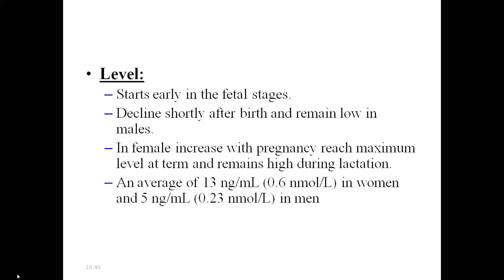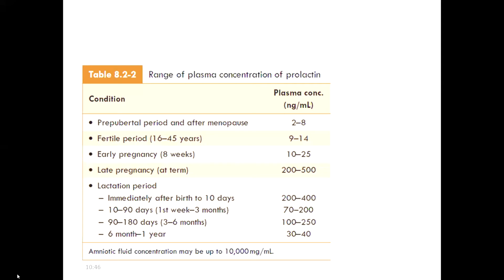The level of prolactin hormone shows diurnal and pulsatile variations. Generally, secretion starts early in the fetal/prenatal stages, then declines shortly after birth and remains low in males. In females, it increases with pregnancy, reaches maximum level at term, and remains high during lactation — averaging 13 nanograms per ml in women and 5 nanograms per ml in men. In females, concentrations are very low in the pre-pubertal period and after menopause, around 2 to 8, and in the fertile period around 9 to 14.